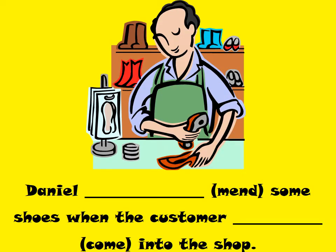Daniel was mending some shoes when the customer came into the shop. He was doing what, Daniel? He was mending some shoes when the customer came in and interrupted him.